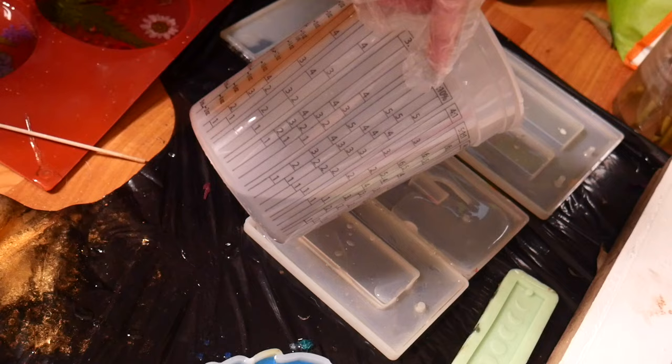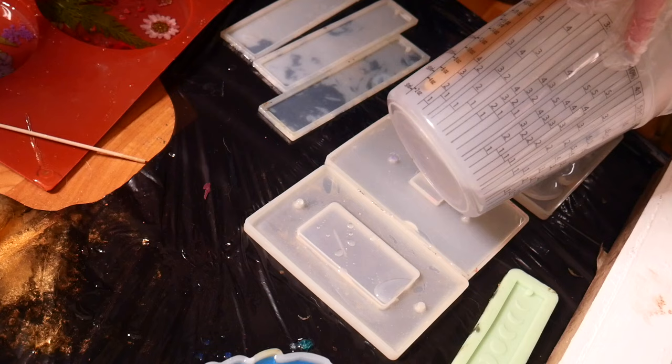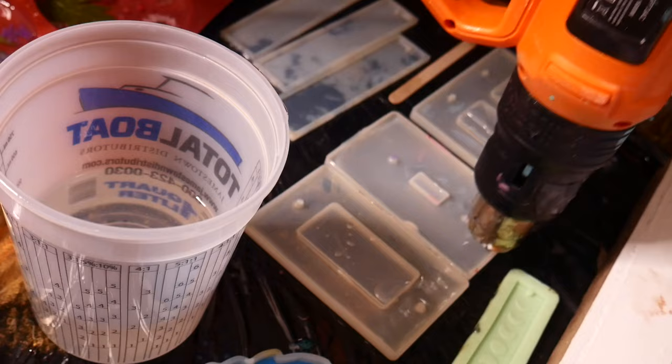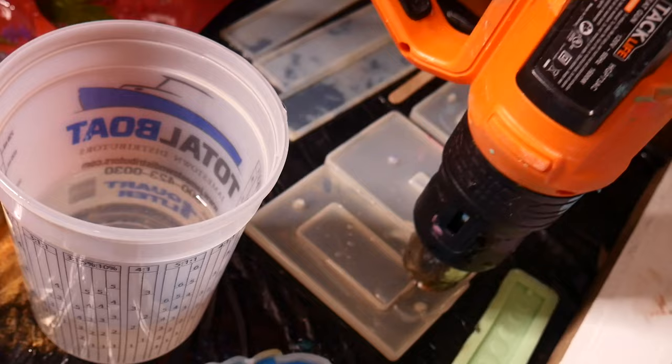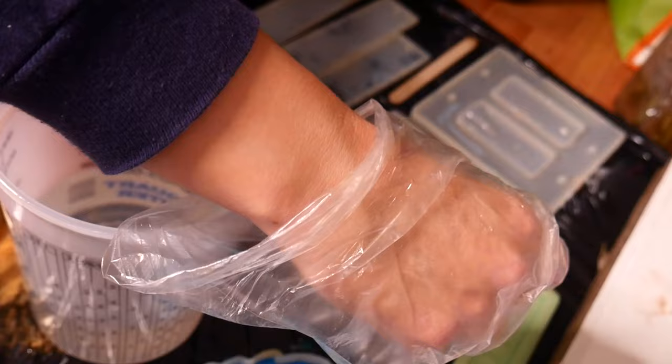So the first thing I do is pour my resin into the molds, of course, as always. And then I use my heat gun to pop the bubbles and I also take one of these thin wooden sticks and I kind of dig out the bubbles from any corners and stuff like that just because it'll cure as little holes if I don't catch them.